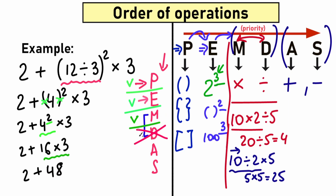The next step is addition and subtraction. We have an addition sign here — this is our last step. We add 2 plus 48 which equals 50. We don't have a subtraction sign. So according to this checklist, going from top to bottom step by step — parentheses, exponents, multiplication, addition — we evaluated the full expression and got 50. That's a quick explanation of PEMDAS.